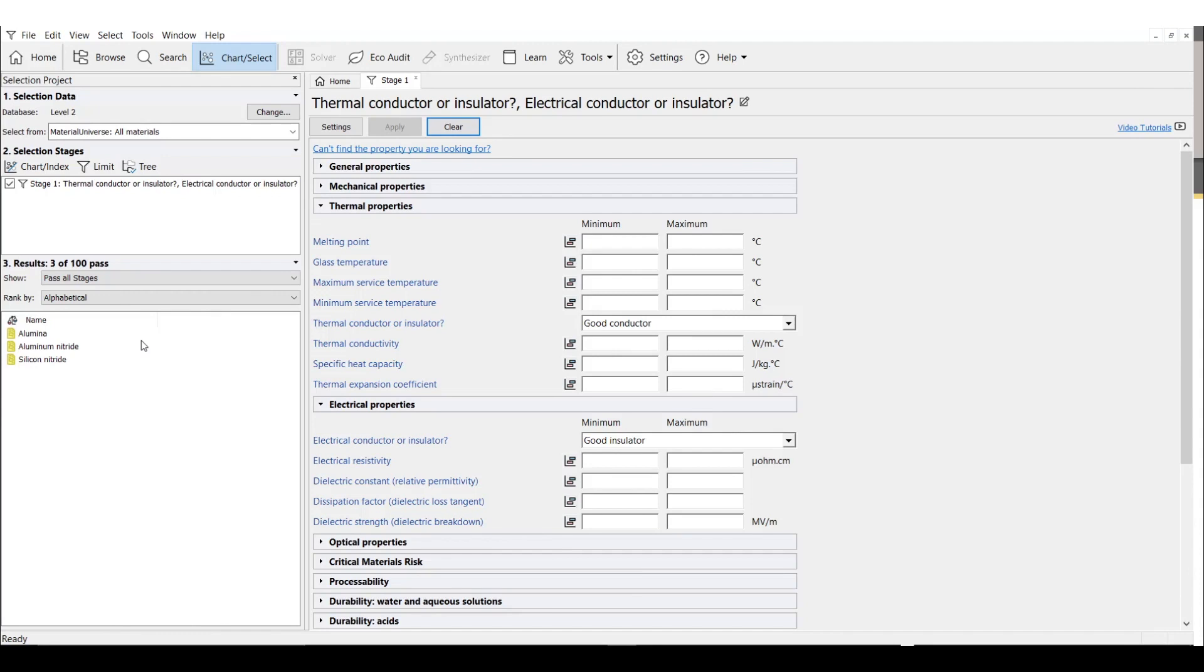And good electrical insulators, like plastics, are poor heat conductors. This has to do with atomic bonding, something we discuss more in our Intro to Material Structure Innovation course.